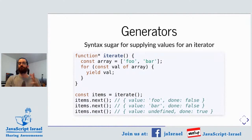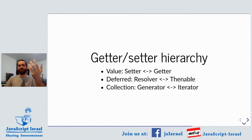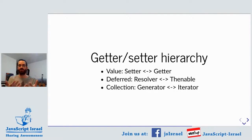So what do we have so far? We have a sort of getter-setter hierarchy. We have a single value — to put something in you call the setter, to take things out you call the getter. Then we have a deferred value or promise — to put things in you call the resolver, to take things out you use the thenable. And then we have a collection with a finite, terminable sequence — to put things in you use the generator, to take things out you use the iterator.